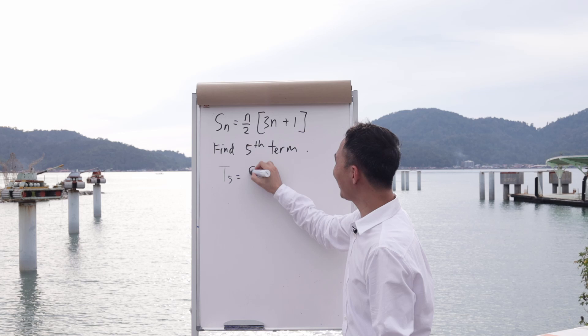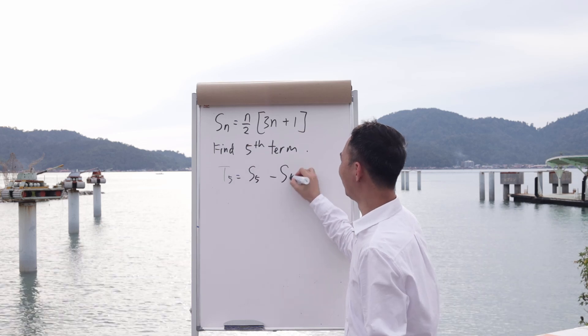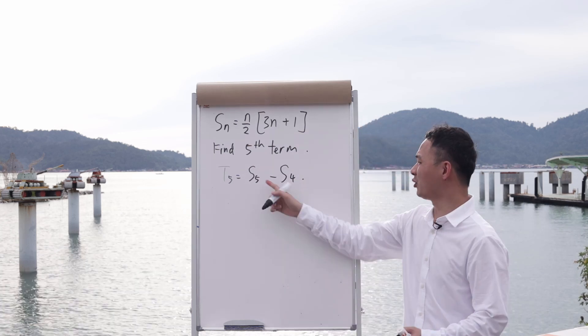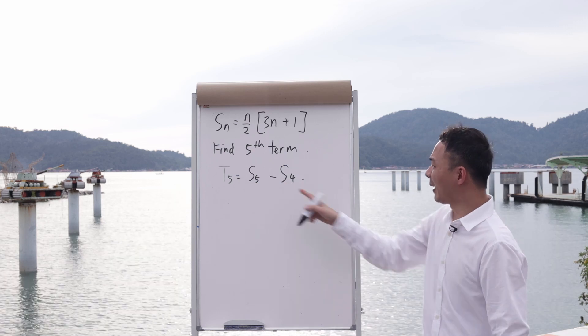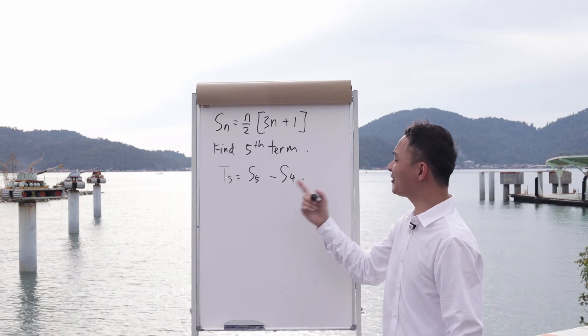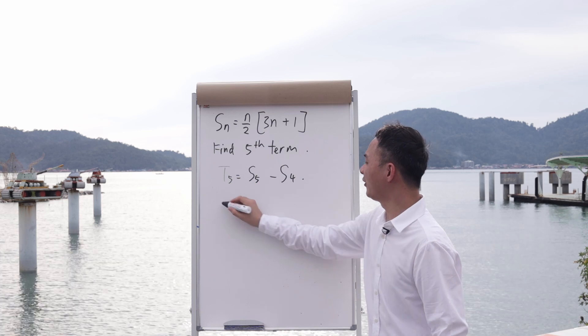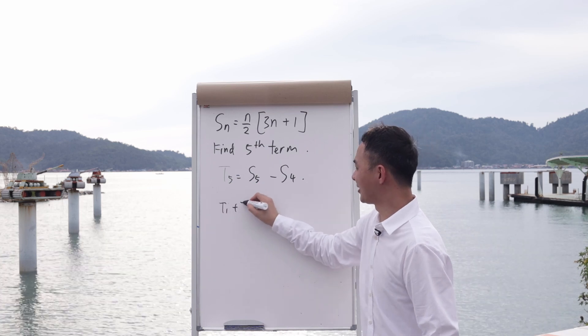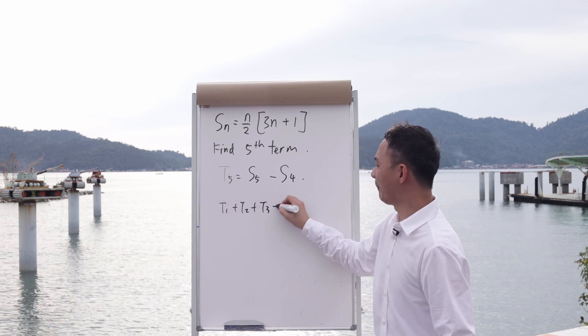When you do s5, you're actually doing t1 plus t2 plus t3 plus t4 plus t5. This is what happens for s5 - the sum from the first term until the fifth term.